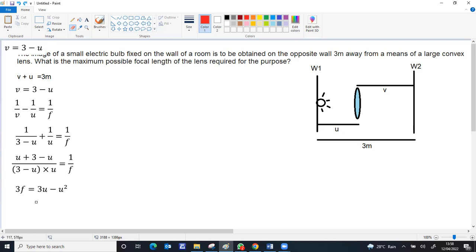Now, if you make it a standard quadratic equation, both terms go to the left: u² - 3u + 3f = 0. For a quadratic equation to have real roots, ax² + bx + c = 0 requires that b² should be greater than or equal to 4ac.